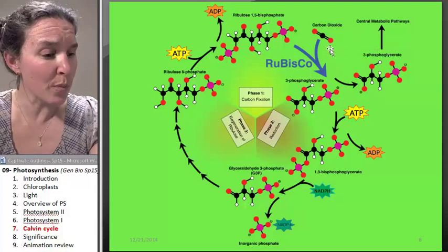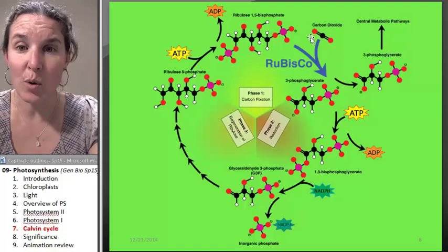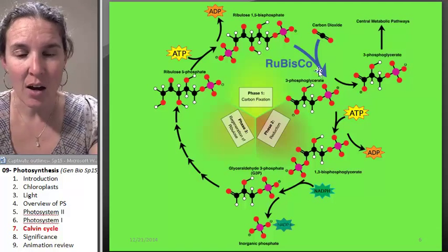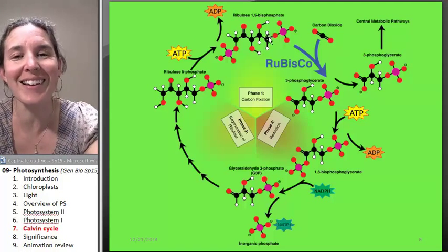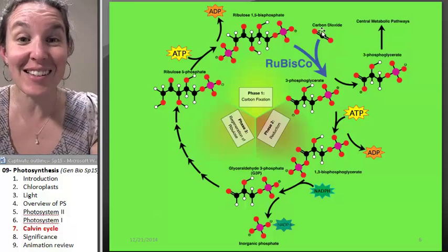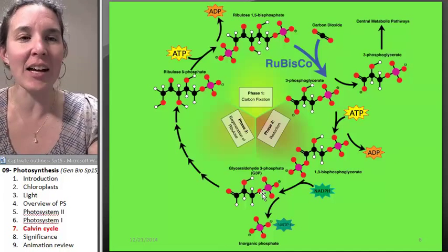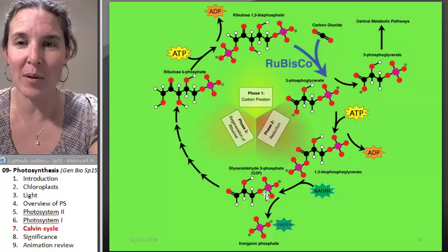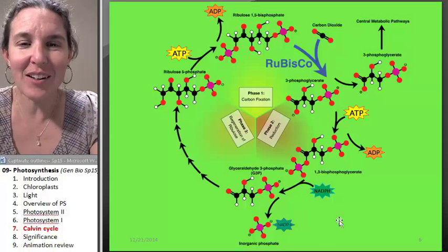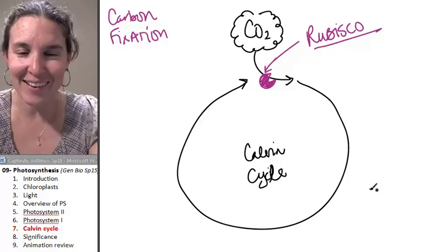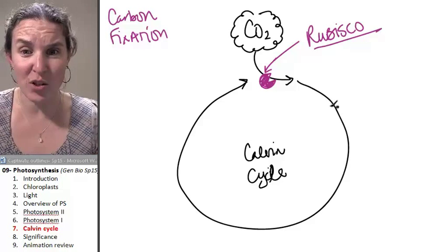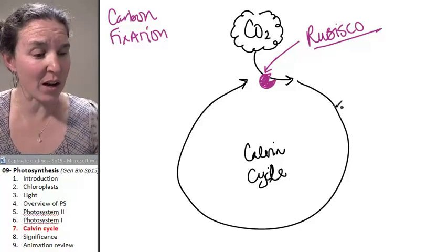You can see Rubisco is right here. We're taking the carbon dioxide. Look at all those things. Does it look familiar? Does it look like we could probably memorize all that? We totally could. So check it out. Just let's go back here and keep in mind that there's a whole bunch of chemical stuff going on.